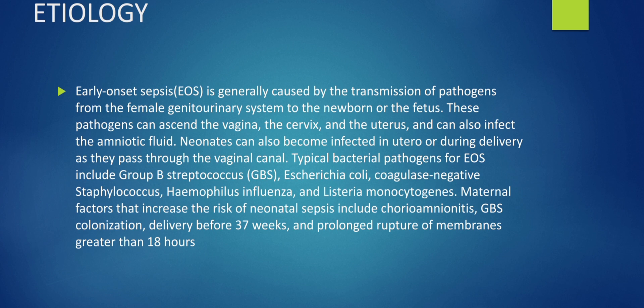When we talk about etiology — the causative agents — early onset sepsis is generally caused by transmission of pathogens from the female genitourinary system to the newborn or fetus. These pathogens can ascend via the vagina, cervix, and uterus, infecting the amniotic fluid. Neonates can also become infected in utero or during delivery as they pass through the birth canal. Typical pathogens include Group B Streptococcus, E. coli, coagulase-negative Staphylococcus, Haemophilus influenzae, and Listeria monocytogenes.